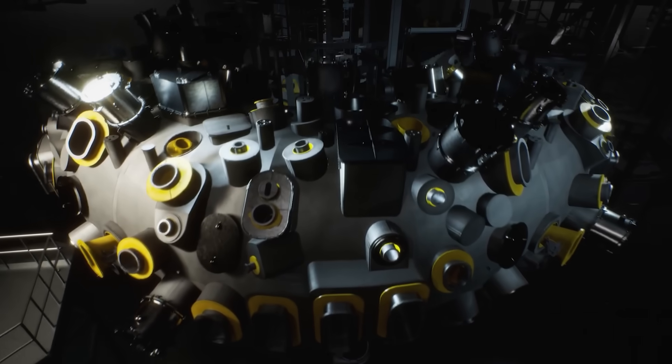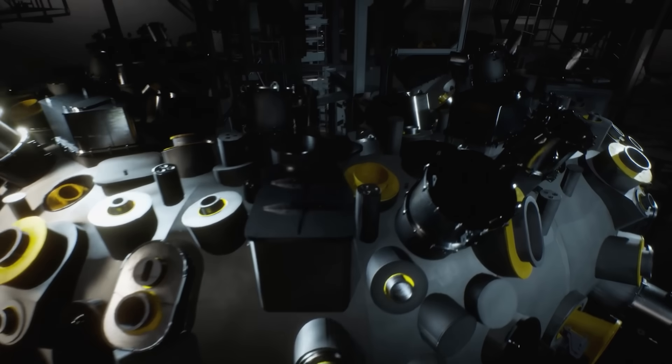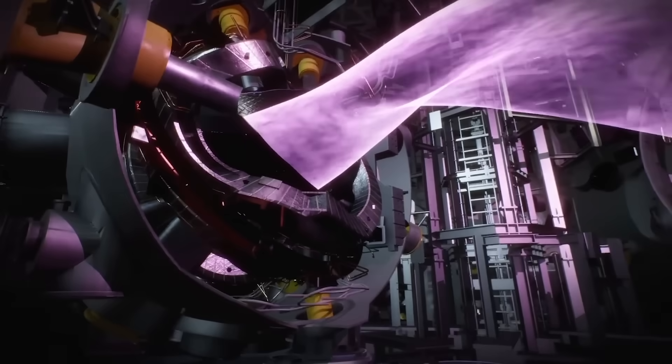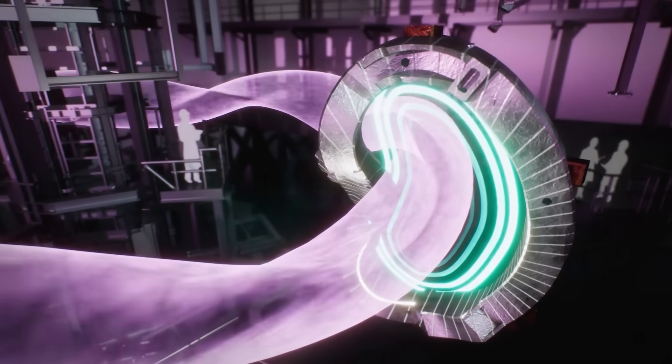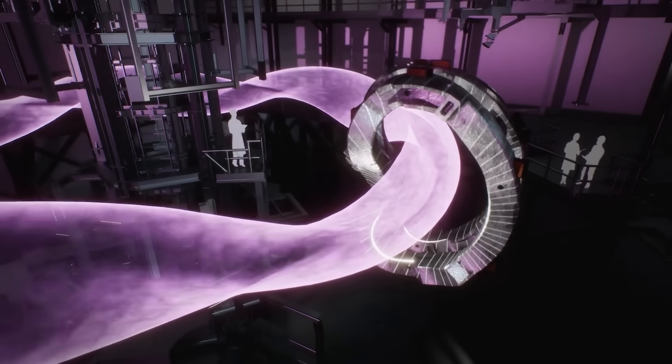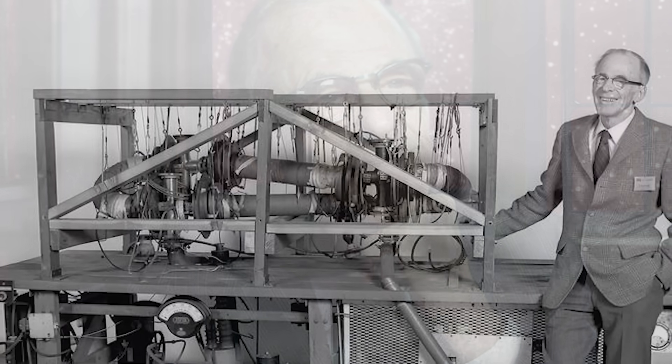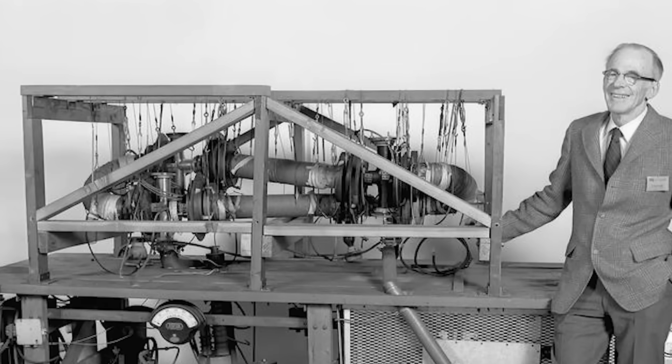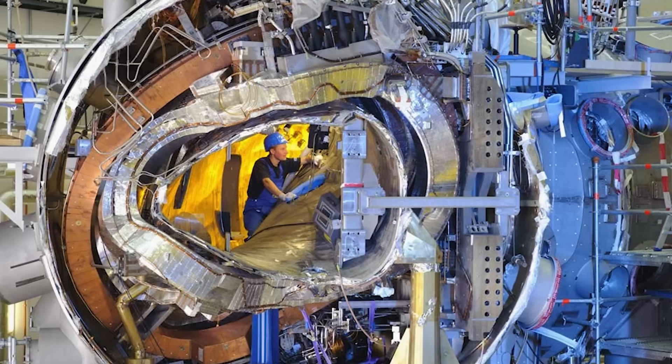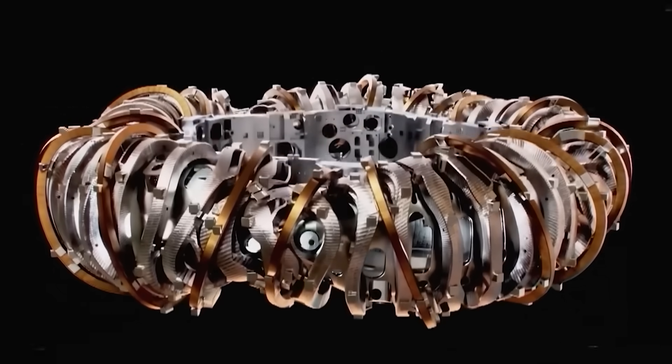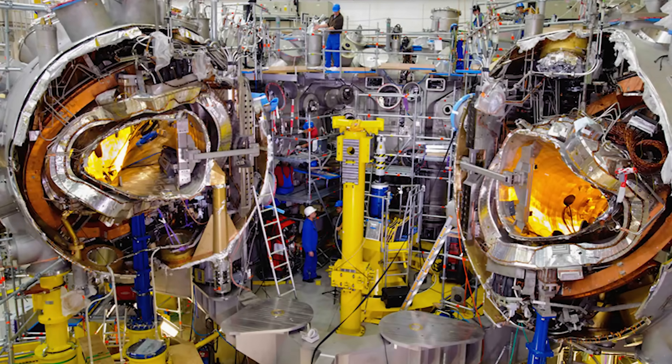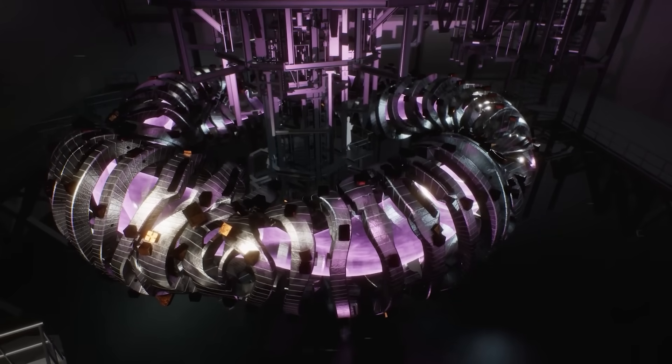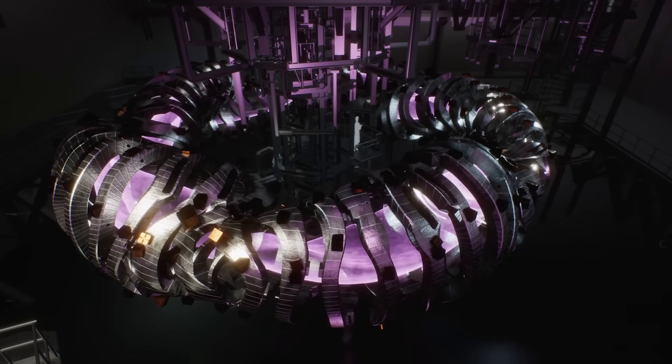Stellarators try to avoid that trap. They create the twist using only external coils. No big plasma current is needed, so disruptions are not built into the design. In theory, a Stellarator can run continuously as long as you keep heating it and feeding fuel. The idea goes back to physicist Lyman Spitzer, who built early Stellarator work at Princeton in 1951. The problem was always complexity. The coils are not copies. Every coil is special. For decades, that seemed like too much risk. Wendelstein 7X exists because Germany believed the reward was worth the pain.